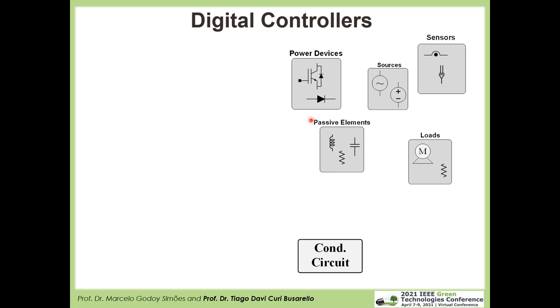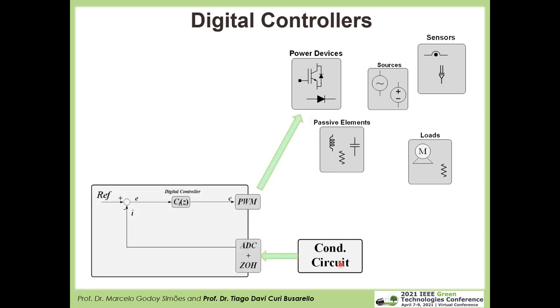Now that we have a good conditioning circuit, let's look at digital controllers. Returning to our conventional blocks including the conditioning circuit, the control unit is represented with a simplified block diagram. After measuring some variables along our power electronic application, the conditioning circuit sends signals to the ADC input of our digital control unit. The measured variable is compared with a reference, the error passes through the digital controller, which acts on the PWM modulator, and this signal goes to the power devices to turn transistors on and off.